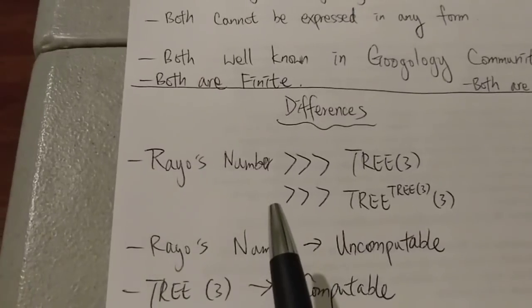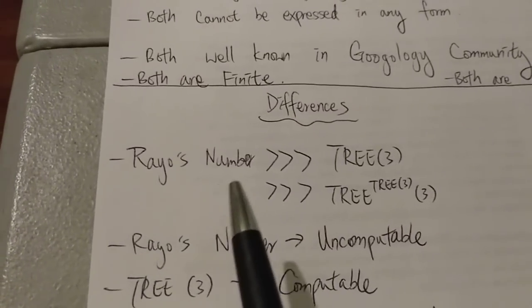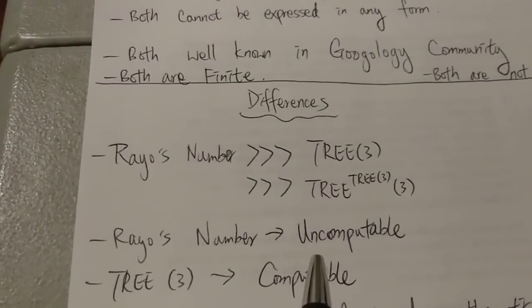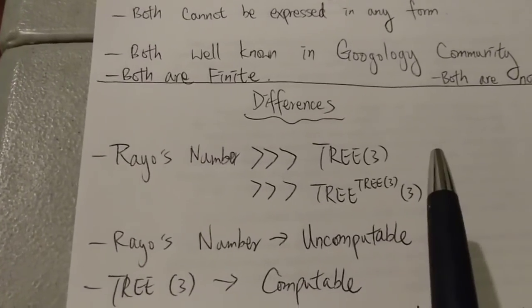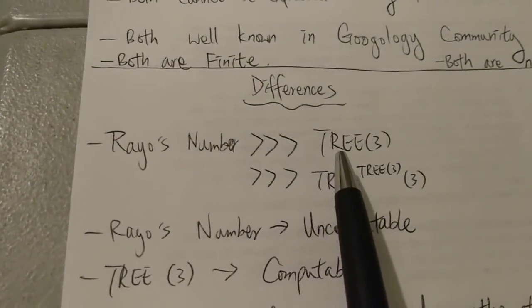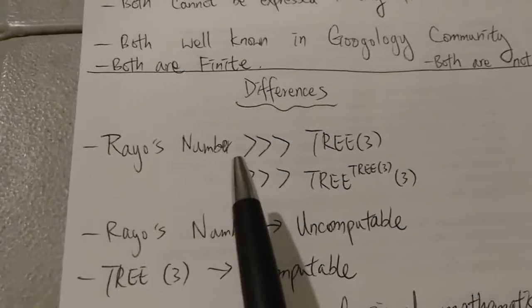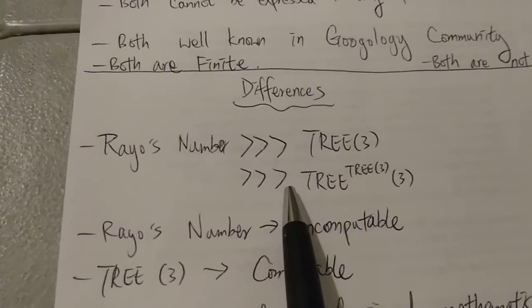So a lot of people are asking how much bigger is Rayo's number compared to TREE(3)? Like, is it TREE(3) to the TREE(3) to the TREE(3)? Like, is there a way that you can beat Rayo's number using the TREE(3) sequence? Actually, I would say not quite.